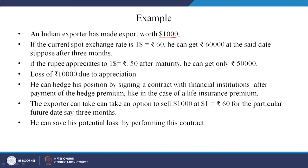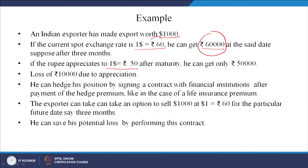Let us see this example. An Indian exporter has made exports worth 1000 dollars. The current spot exchange rate is 1 dollar = 60 rupees, so he expects to get 60,000 rupees. After 3 months he will receive it. But the rupee appreciates to 50 - meaning the rupee has become stronger and the dollar correspondingly weaker. Earlier you needed 60 rupees to buy 1 dollar; now you need only 50 rupees. So he gets only 50,000 rupees.